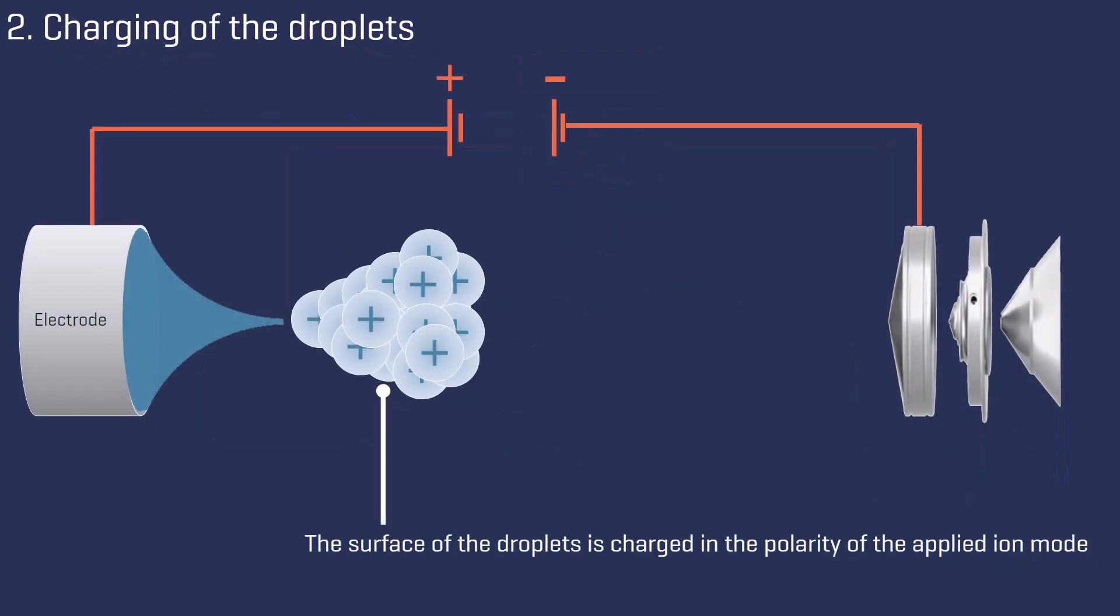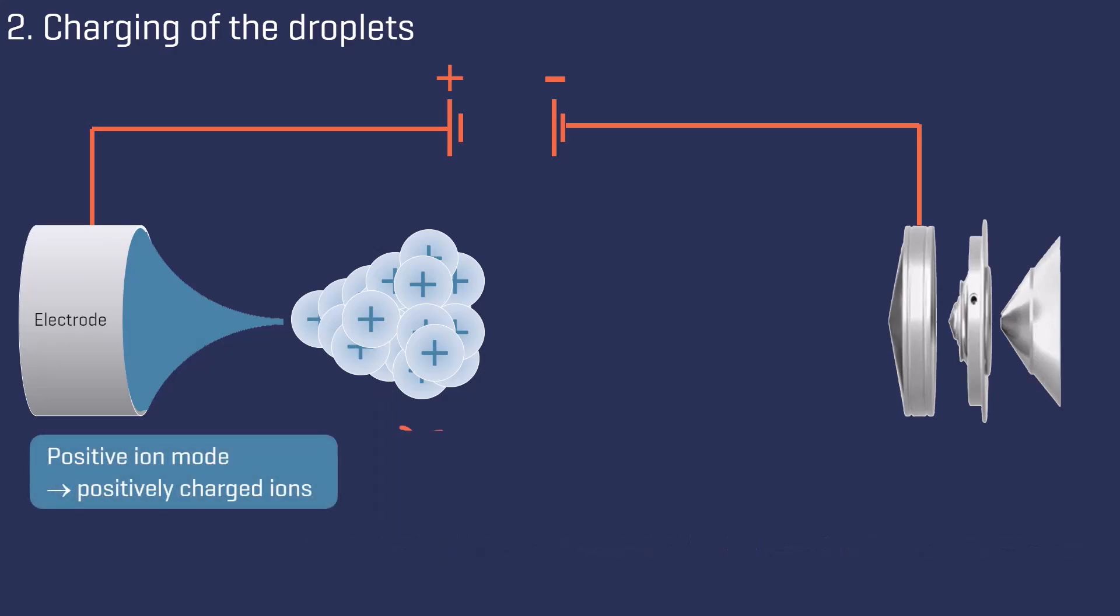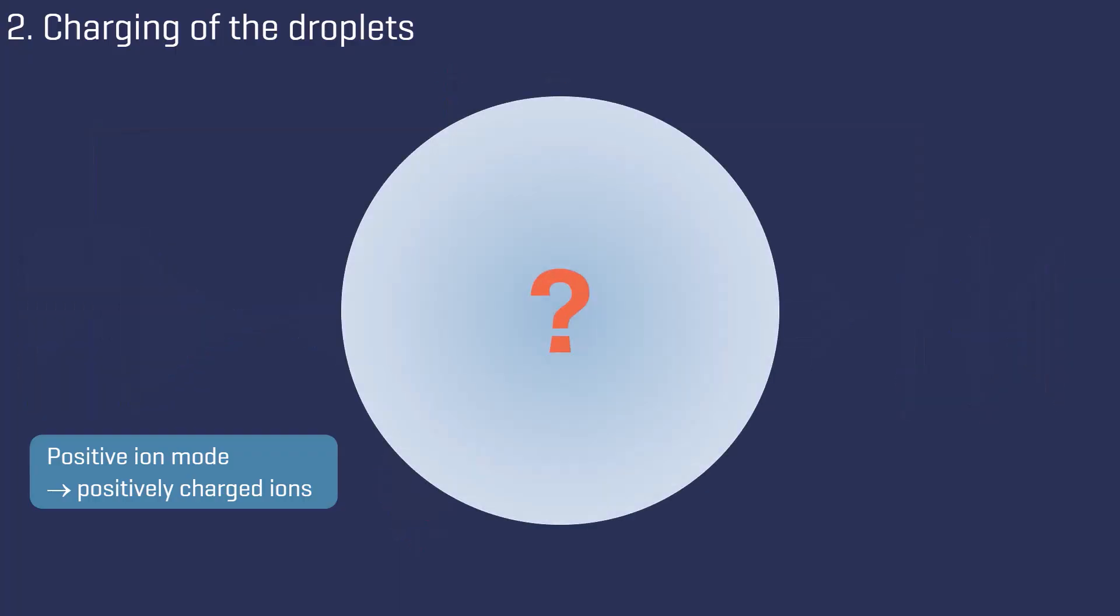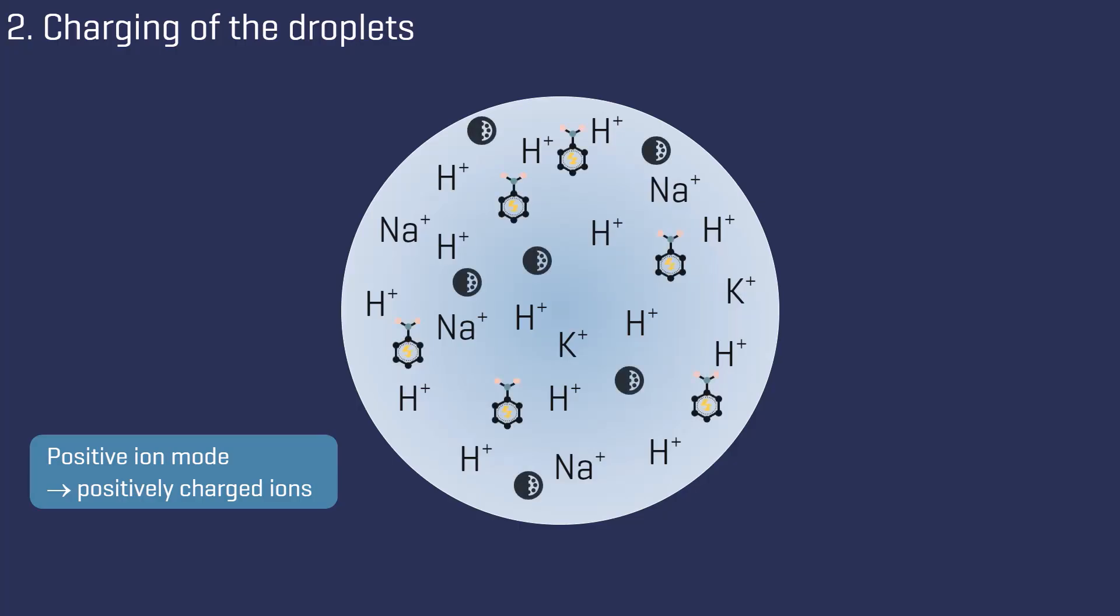The droplets are charged on their surface due to the spray voltage applied in the specified polarity, in this example, the positive ion mode. Their fate is no longer gravity, because their trajectory is now guided towards the entrance of the mass spectrometer by the applied electric field. But why are the droplets charged? Because they contain charged matter, such as protons or sodium ions.